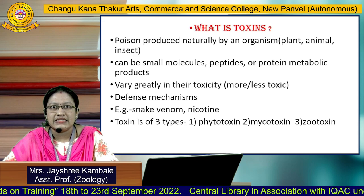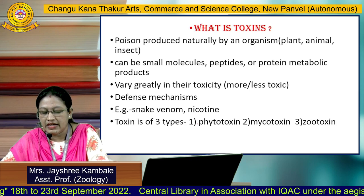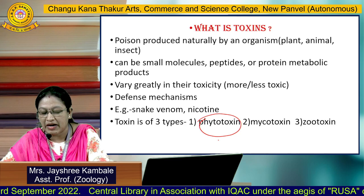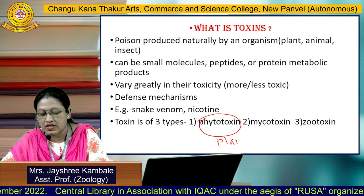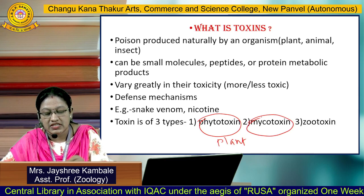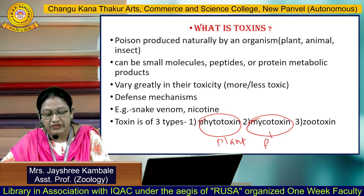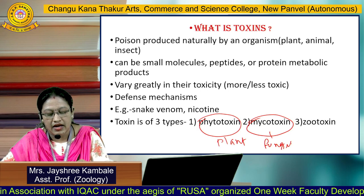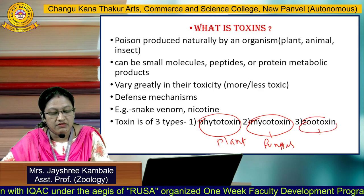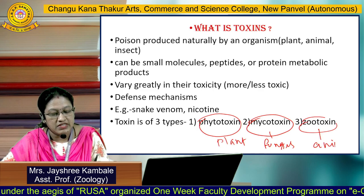These toxins are of three types. One is Phytotoxin, which is released by the plant. Another one is Mycotoxin, which is released by the fungus. And the third one is Zootoxin, which is released or secreted by animals.